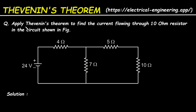Question: Apply Thevenin's theorem to find the current flowing through the 10 ohm resistor in the circuit shown in the figure. For this circuit, we have to find the current through this 10 ohm resistor by using Thevenin's theorem.